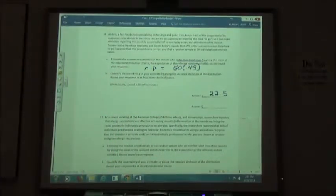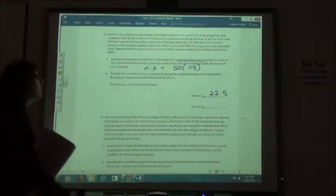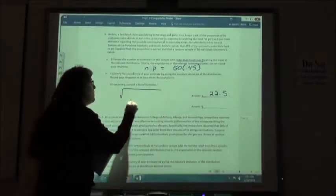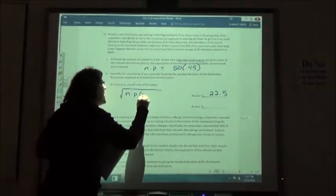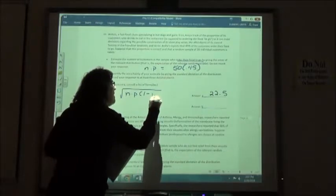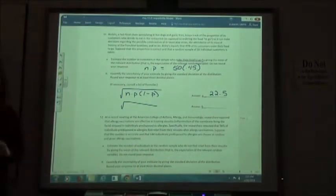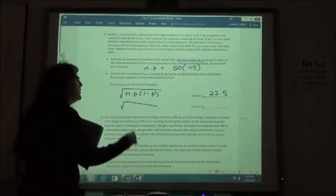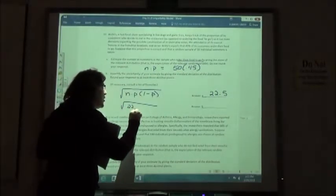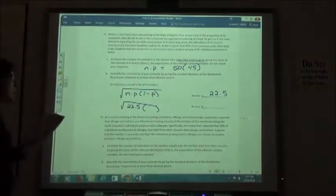Second part, we want to estimate the standard deviation of our distribution. Our formula says we're doing N times P times 1 minus P. And so, if I plug my numbers in there, N times P was the 22.5, and what would I use for 1 minus P?